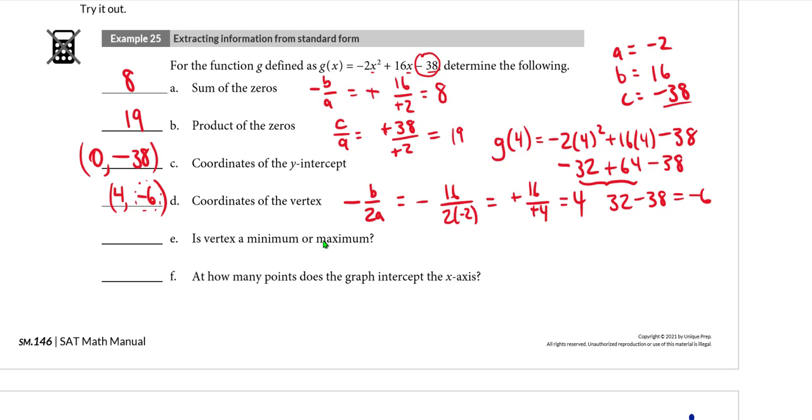Is the vertex a minimum or maximum? Remember that the way that we determine whether the vertex is a minimum or maximum is by looking at the A value. And more specifically the sign on A. The sign on A is negative which means this is a frown, which means that this parabola has a maximum. Its vertex is a maximum. So that vertex 4, negative 6 is at the very top of the parabola.